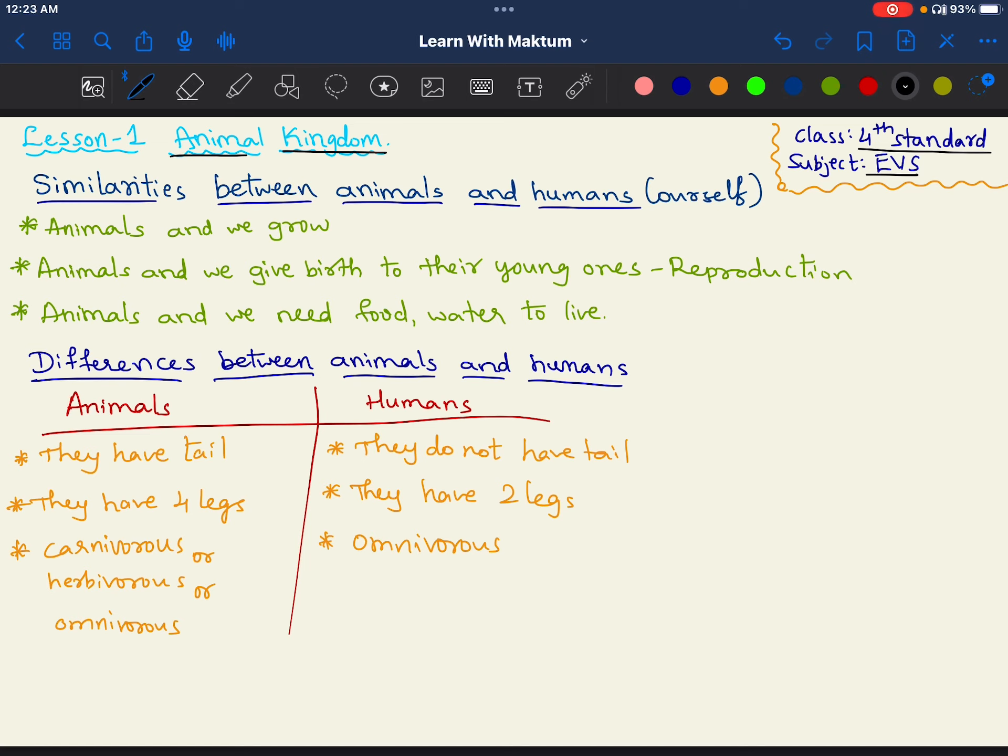In this lesson, first we will try to understand what are the similarities between the animals and the humans. Humans are also animals, but we will see what are the similarities and the differences. In previous classes, 3rd standard, you have already studied that humans are also animals. So what are the similarities we have? Firstly, the first similarity is the growth. Animals will also grow, we will also grow. And both of us will give birth to young ones. That process we call it as reproduction. And lastly, we need food and water to live. Animals also need food and water to live.